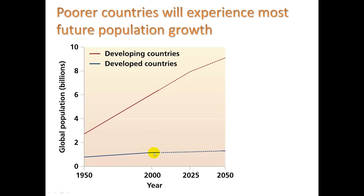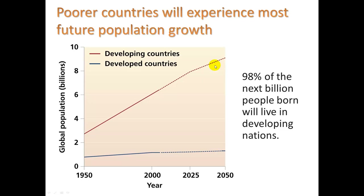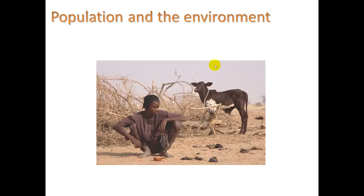About 1 billion are in developed countries, and they're still on a big upswing. In fact, 98% of the next billion people born will live in developing nations.